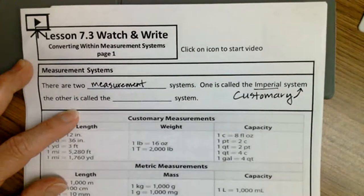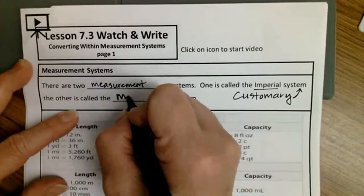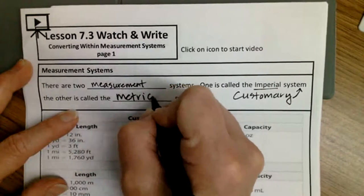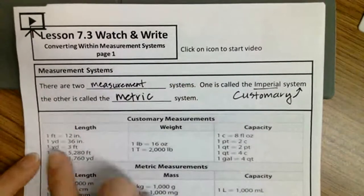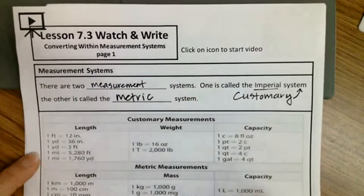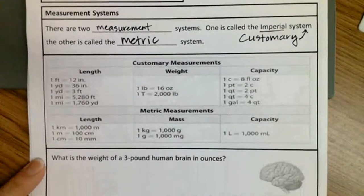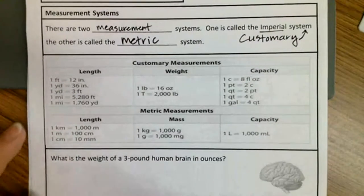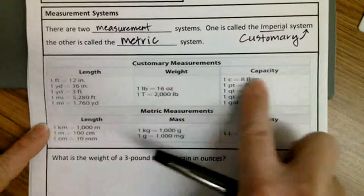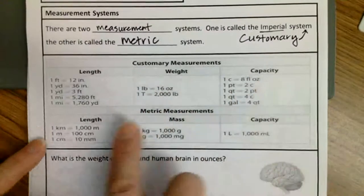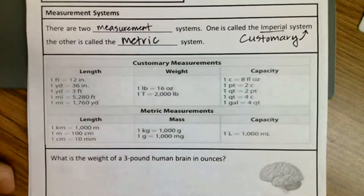The second system is called the metric system. This table here shows you some conversions within each system. The top is the customary conversions, and the bottom is the metric.